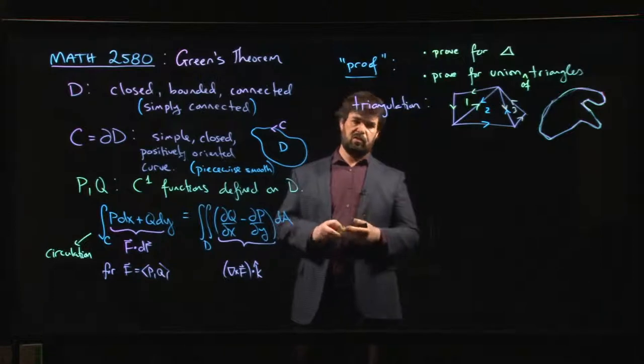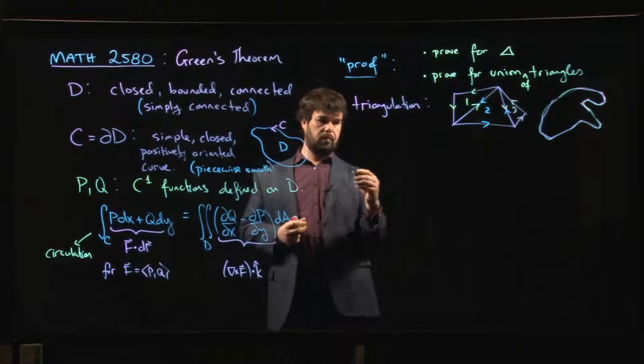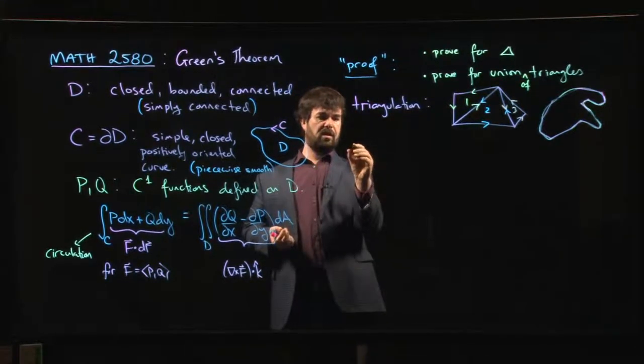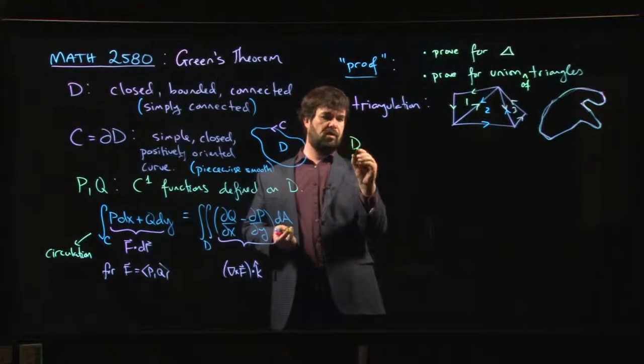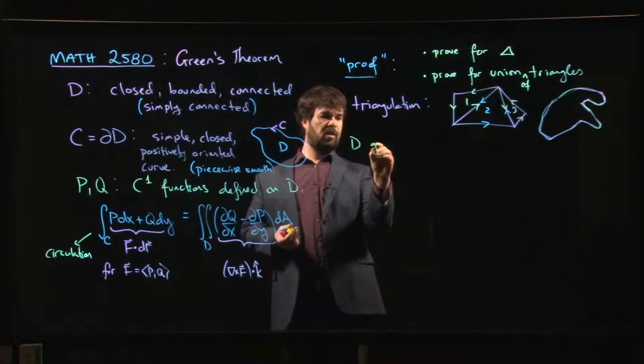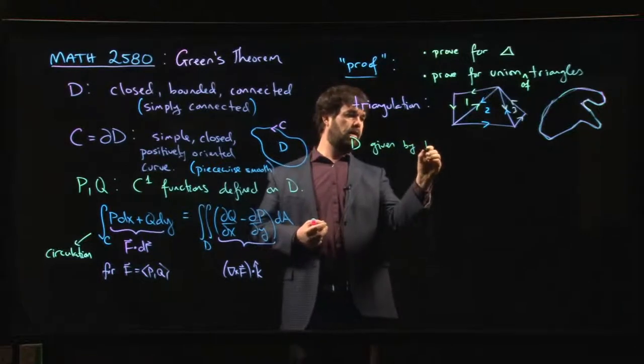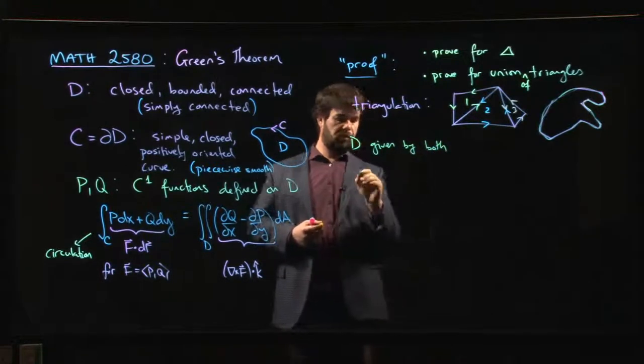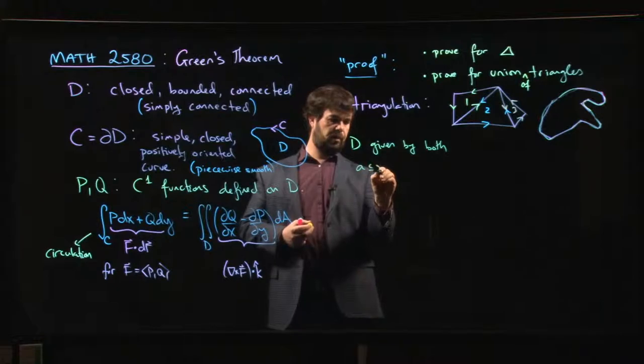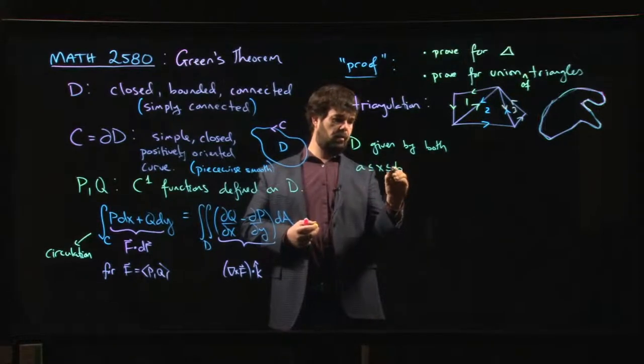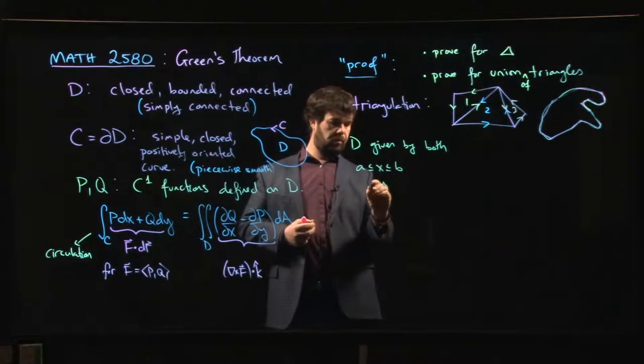So what you do is you say, okay, well, let's just consider a region D where you have two descriptions. So let's say it's one of these ones where you can give it by both saying that X is between A and B, and Y is between, let's say,